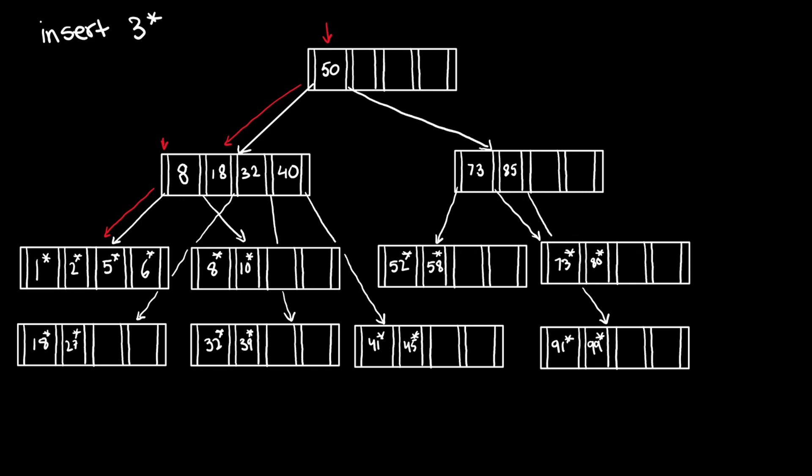Now, we reach a data entry, but it's full. But this is the only place where we can insert 3. To make space, we look at the sibling entry and see if there's space in there.